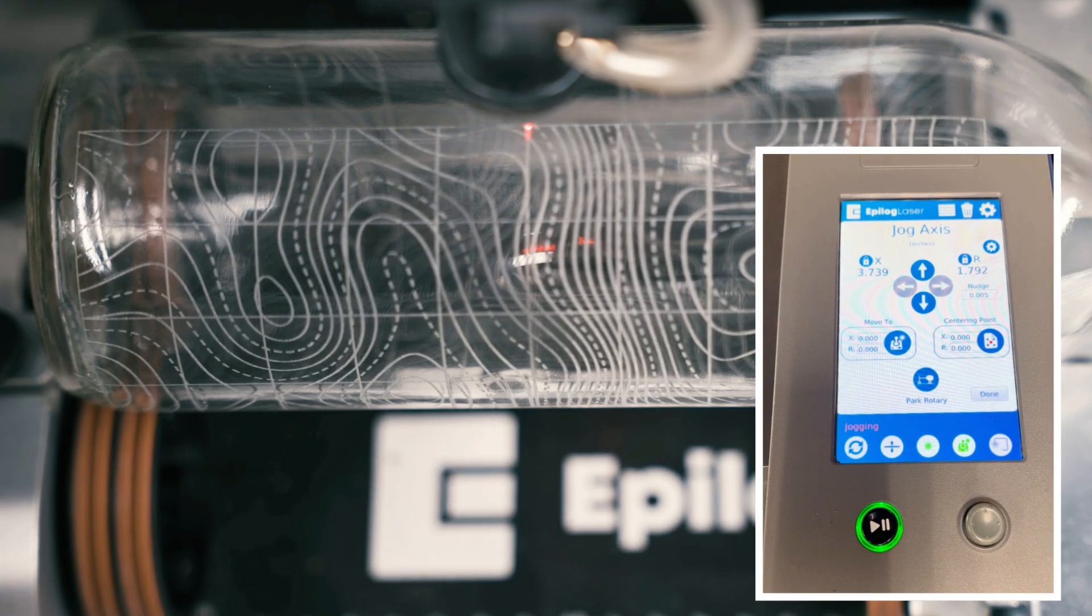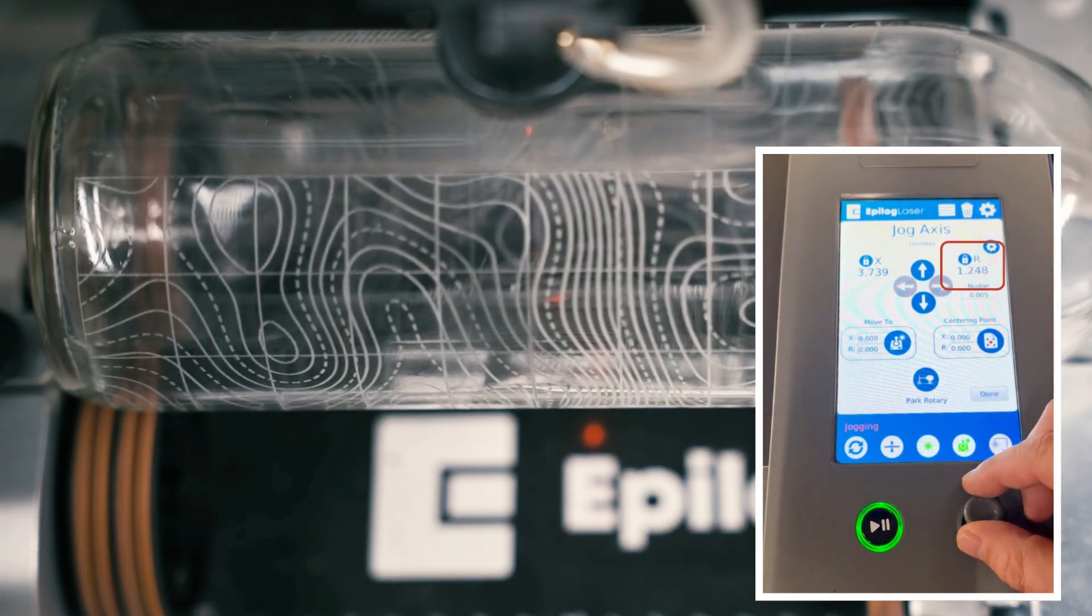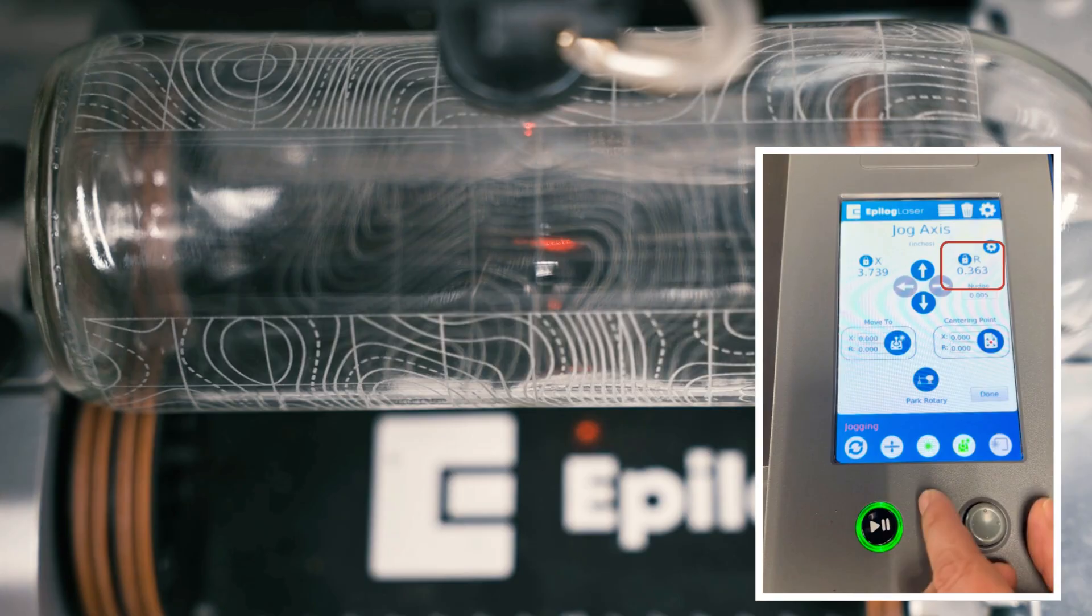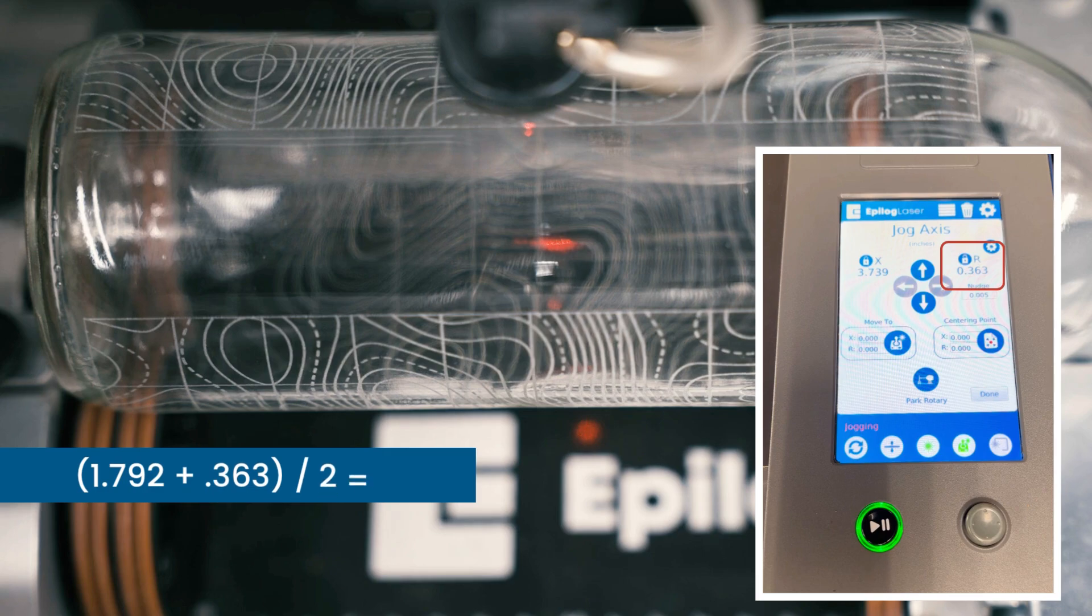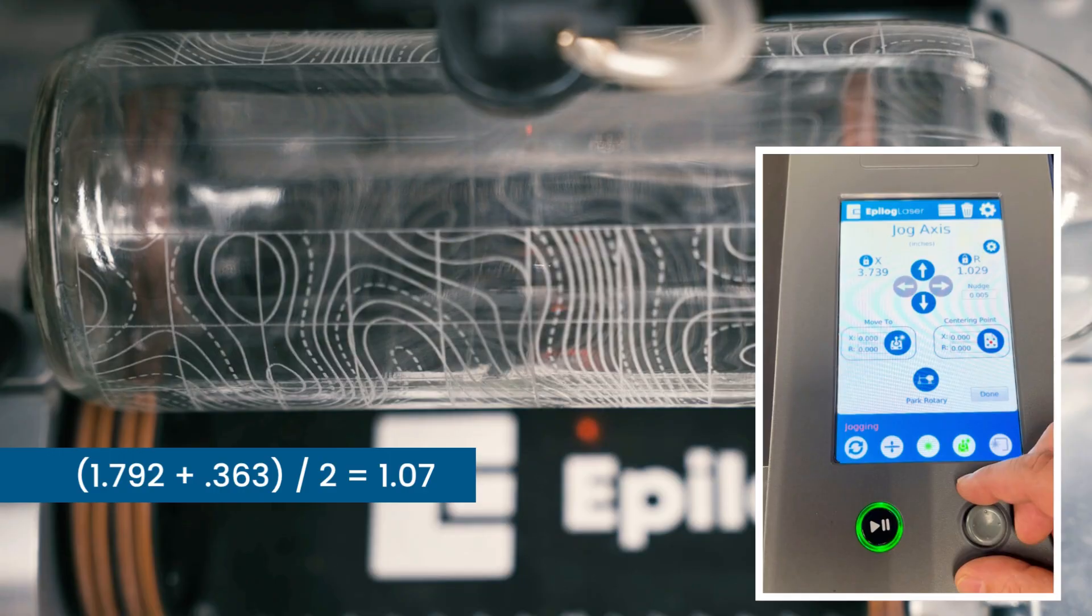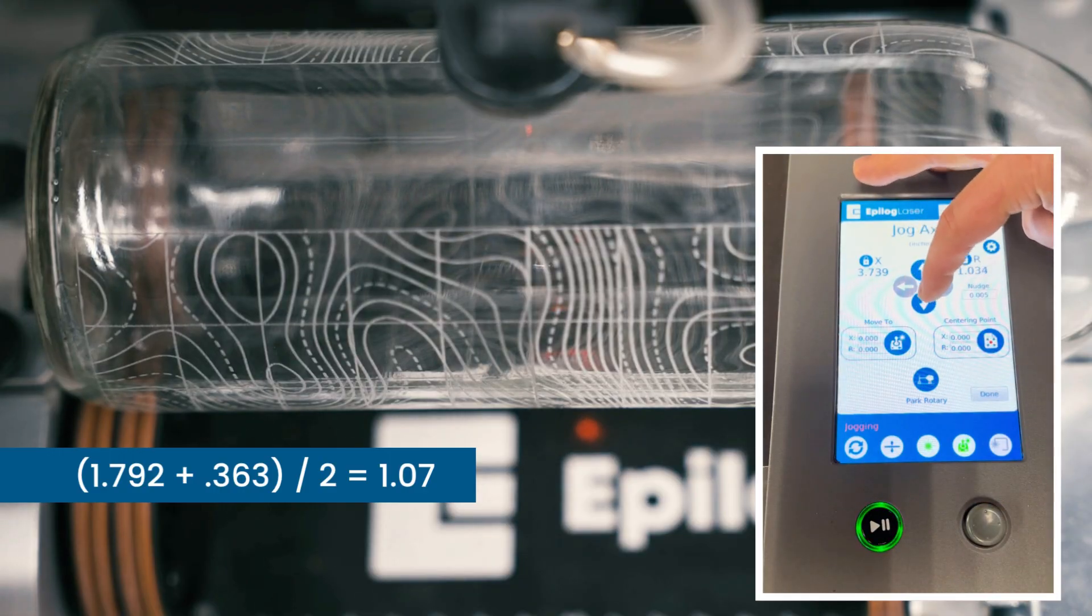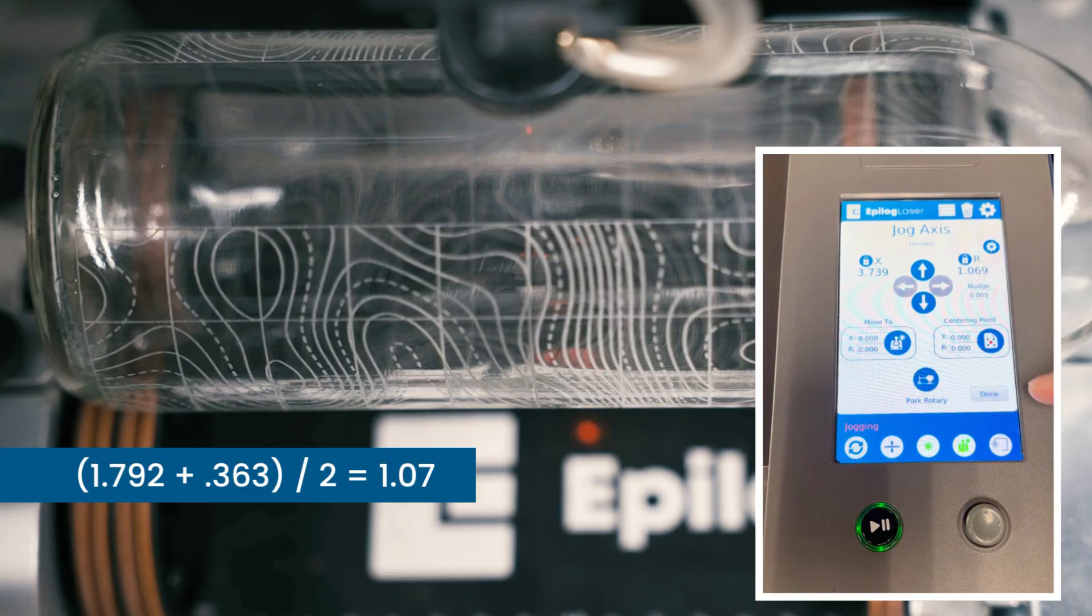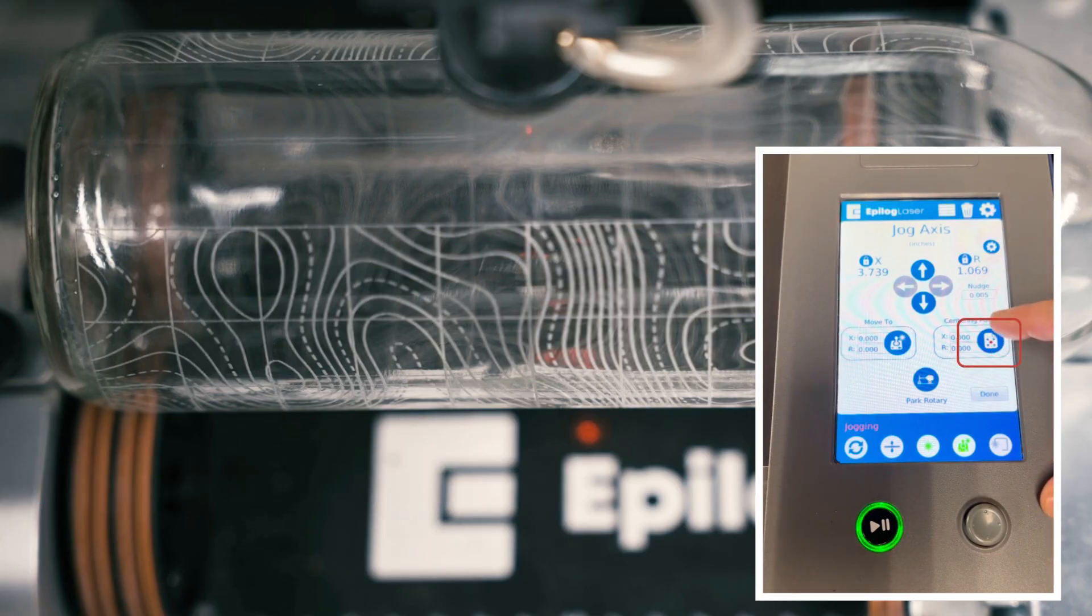Now for the Y position we can see that we're at 1.792. That's the R number. So I'll just write that down and then scroll this up until we just touch that top line. And I can see I'm at 0.363. Now if I add those two numbers together, divide by two, I get 1.071. So I'm just going to move this back down until I'm right at 1.071 or close to that. And use the arrows to nudge that into place. Once I'm happy, now I can hit centering point and my position is ready to go.